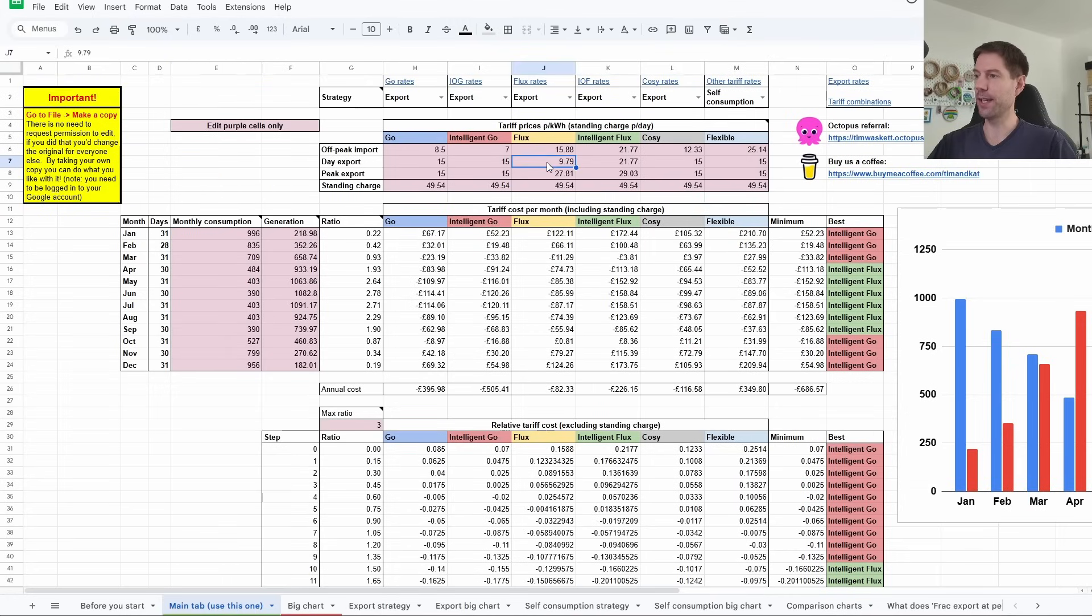Really you need a completely different strategy for Flux and Intelligent Flux because they behave in a very different way. In particular, as soon as the day export rate drops below the overnight import rate, this strategy isn't really optimal and neither is the self-consumption strategy. What you really want to do is use solar to charge your batteries during the day up until 4 p.m., and then force export as much as you can during the 4-7 p.m. peak window, which is when you get the really good export rate.